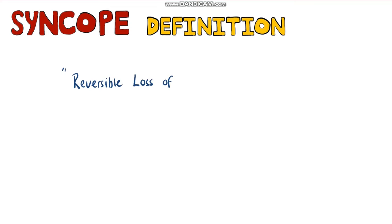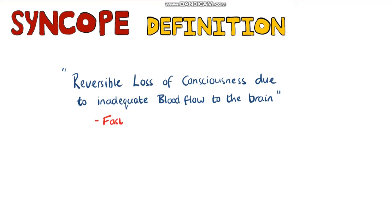The definition of syncope is a reversible loss of consciousness that occurs due to an inadequate blood flow to the brain. Usually, they are characterised by a fast onset, short duration and a spontaneous recovery.